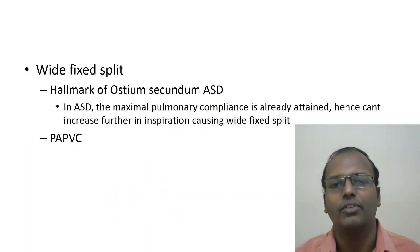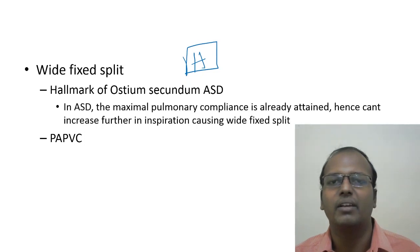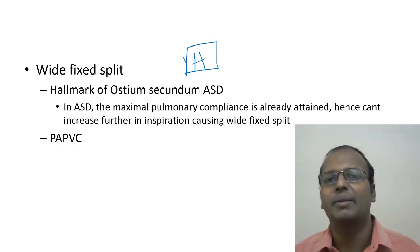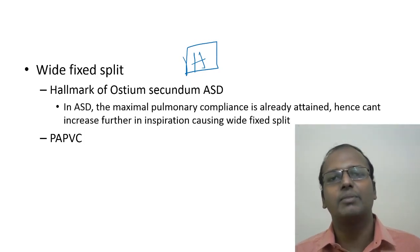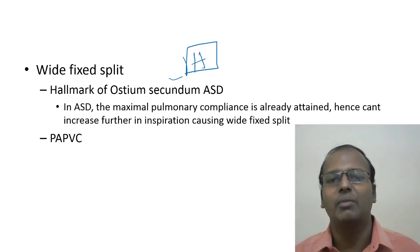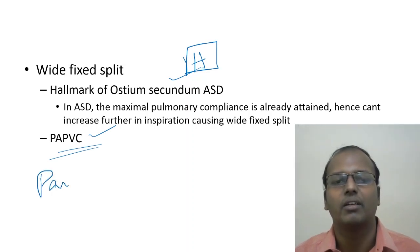Wide fixed split is the hallmark of ostium secundum ASD. Normally, inspiratory-expiratory variation causes the split to widen and narrow. In ASD, the interatrial shunt equalizes the variation: during inspiration, more blood enters the right atrium; during expiration, blood shunts from the left to right atrium — so the split remains wide and fixed regardless of respiration. Wide fixed split also occurs in PAPVC (partial anomalous pulmonary venous connection).